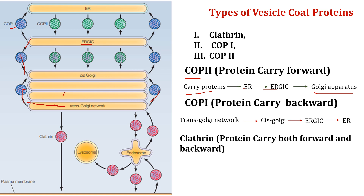The third type is clathrin-coated vesicles, which are a large class of coat protein. Clathrin carries cargo both forward and backward, and is responsible for transferring proteins in both directions: from the trans-Golgi network to the plasma membrane, from the trans-Golgi network to the endosome and then lysosome, and in the reverse direction from the plasma membrane to endosomes and from endosomes back to the trans-Golgi network.